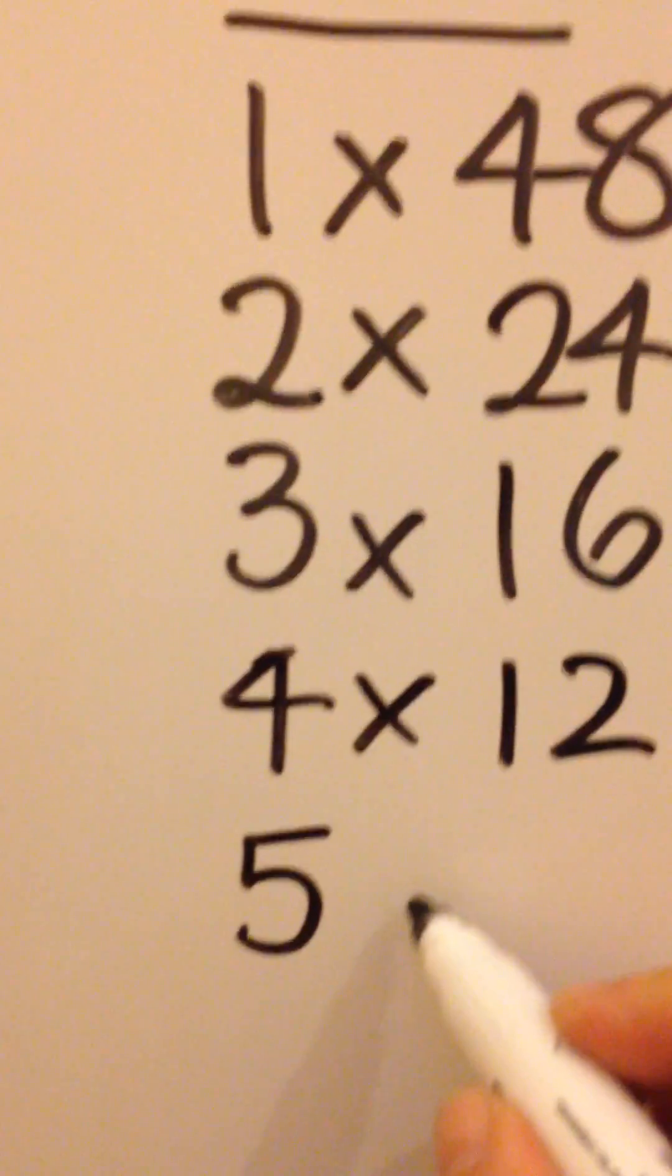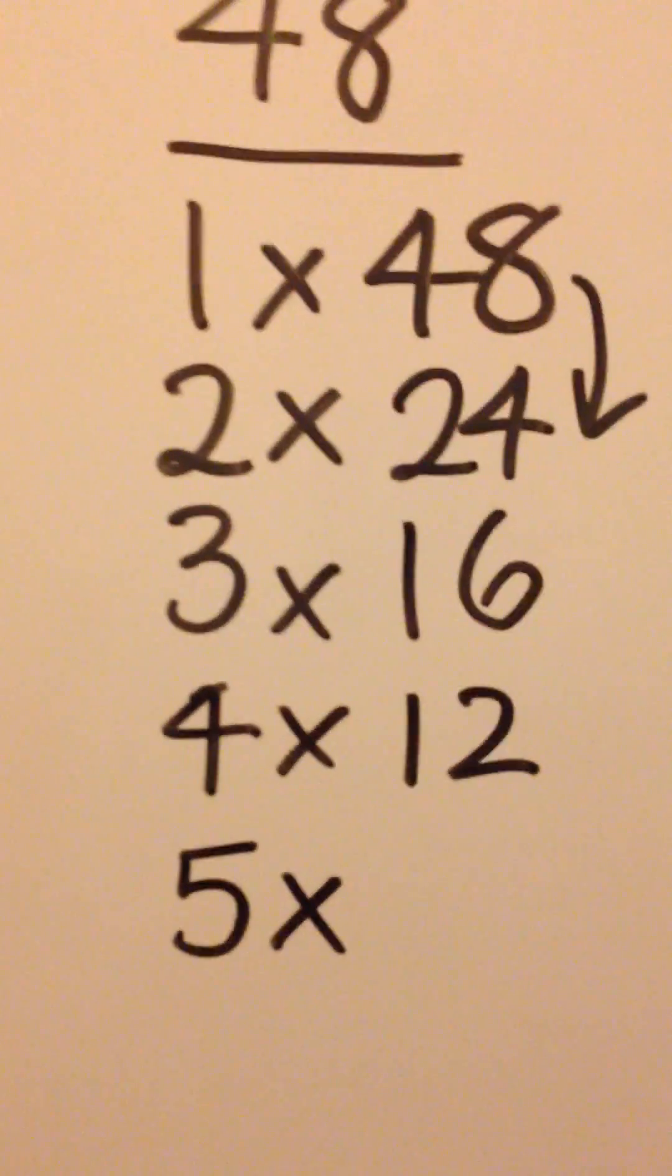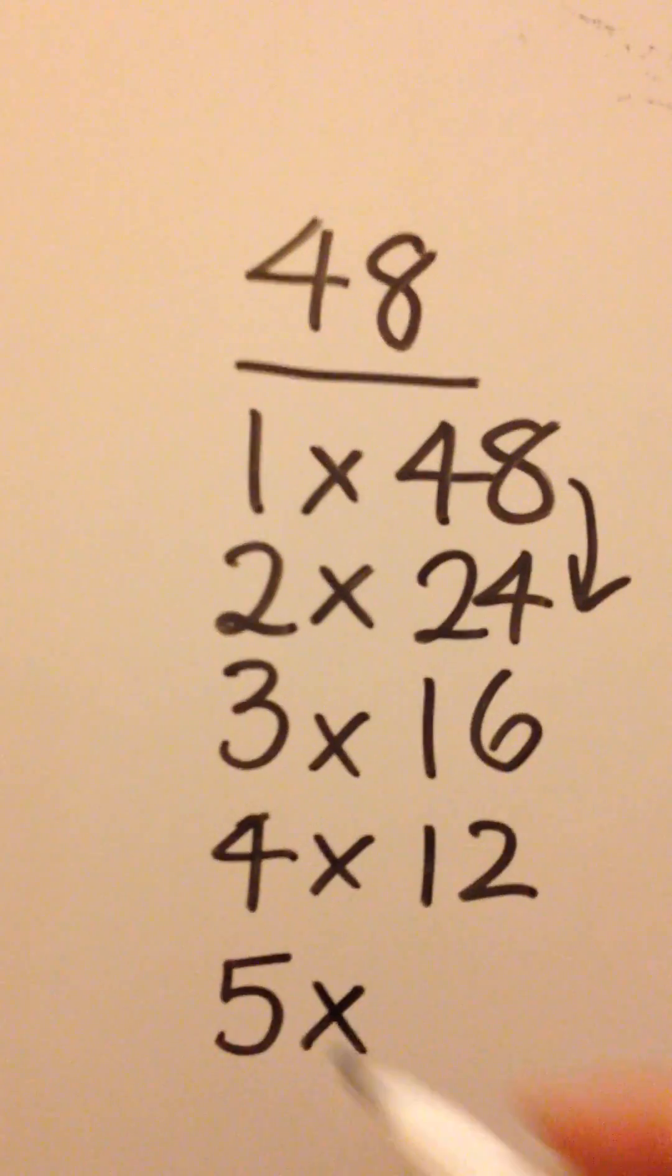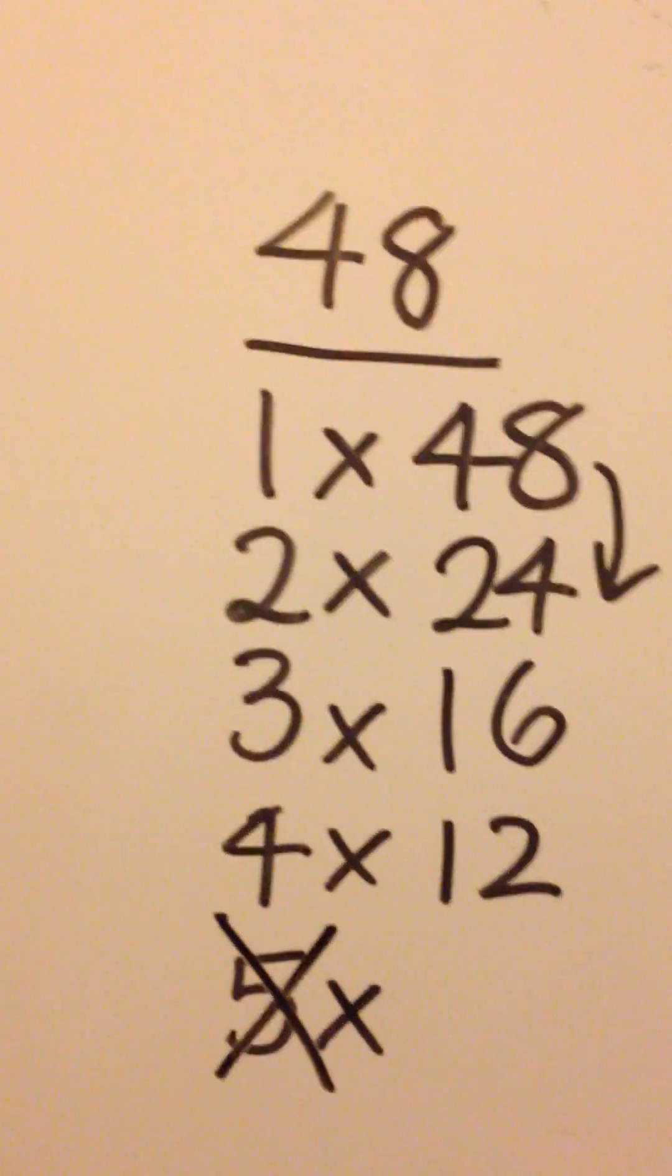Moving on to 5, that's a bit more tricky. If you look at this number here, it doesn't end with a 0 or a 5. Straight away, you can say 5 is not a factor.